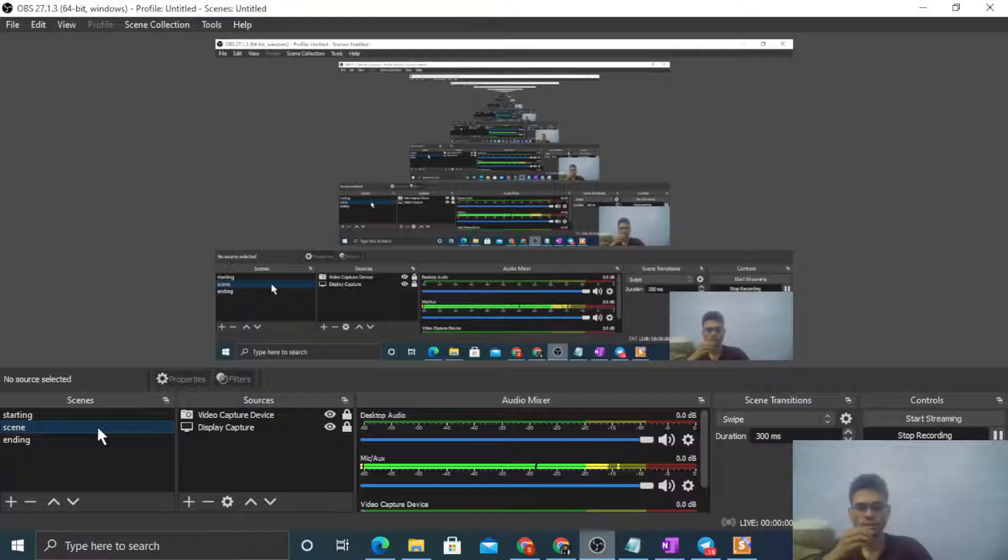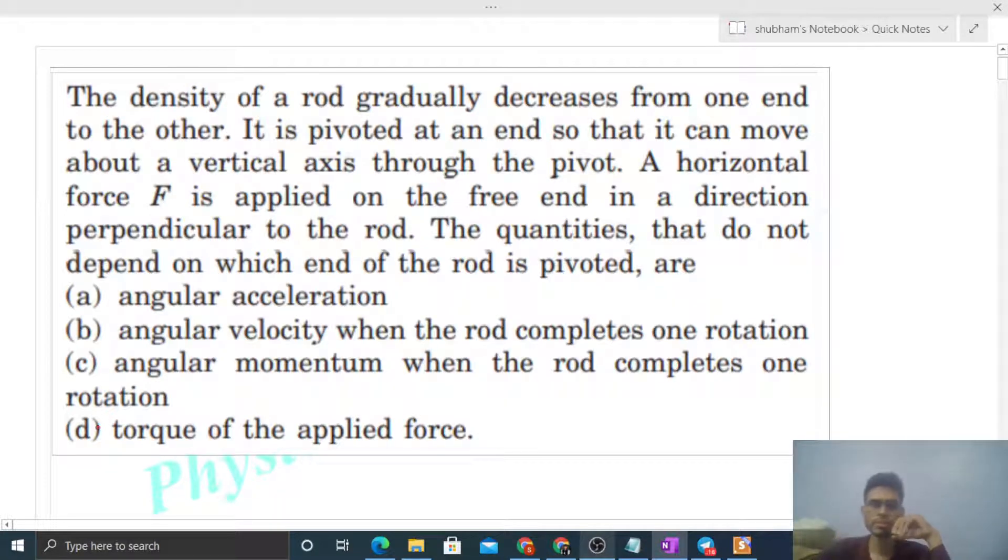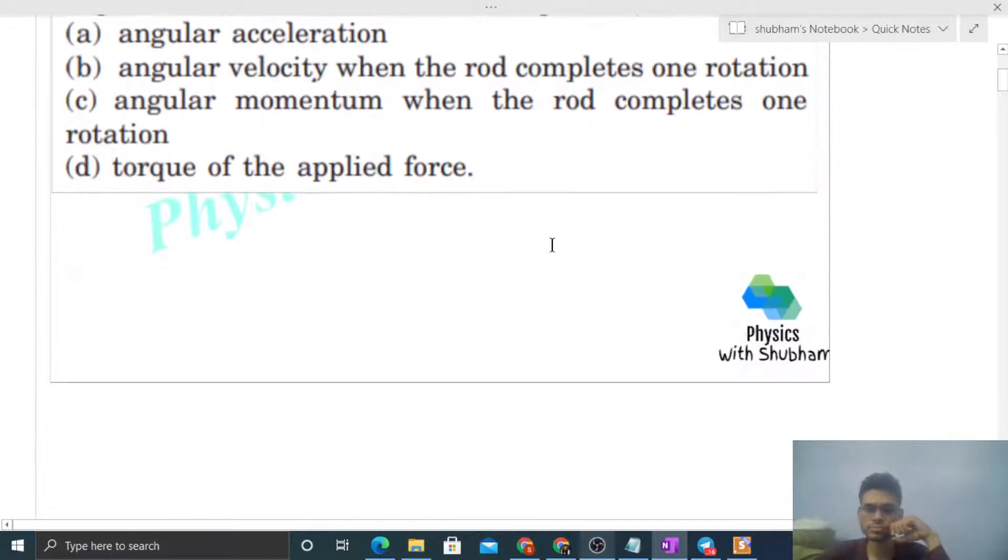Okay, hi everyone. Today let's discuss this interesting problem. It says the density of a rod gradually decreases from one end to the other. It is pivoted at an end so that it can move about a vertical axis through the pivot. A horizontal force F is applied on the free end in a direction perpendicular to the rod.